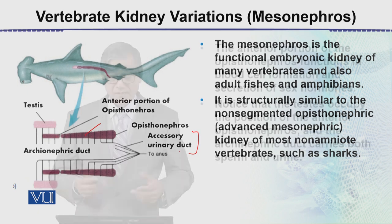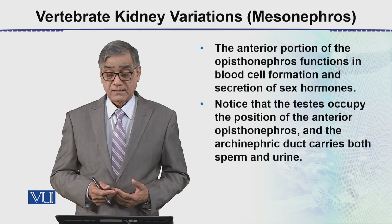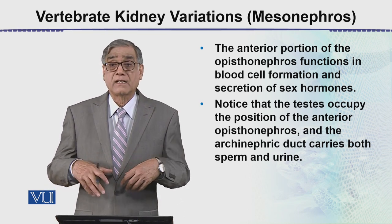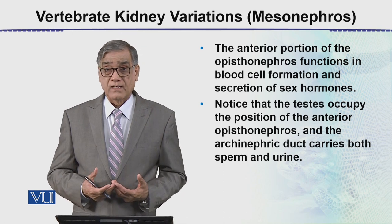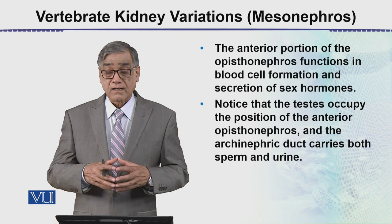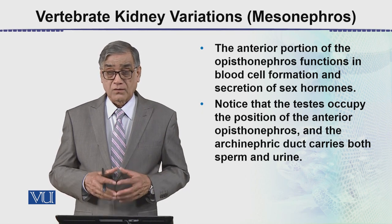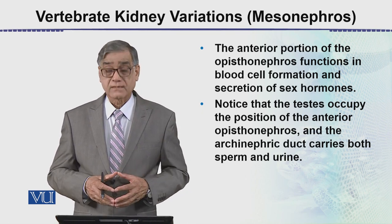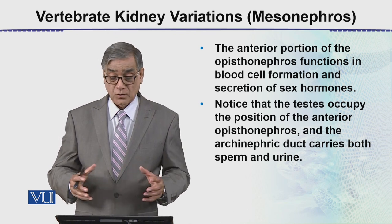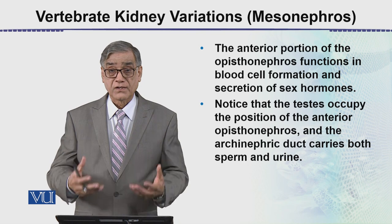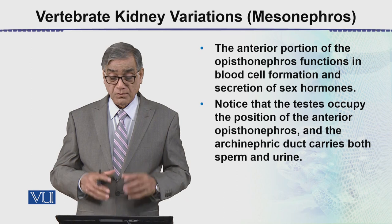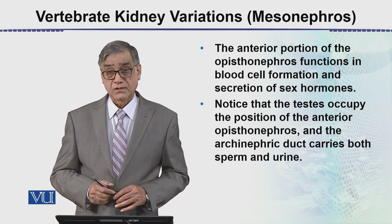The anterior portion of the opistonephros functions in blood cell formation — this is additional work. The mesonephros also secretes certain sex hormones. Notice that the testes occupy the position of the anterior opistonephros, and the archeonephric duct carries both sperms and urine.